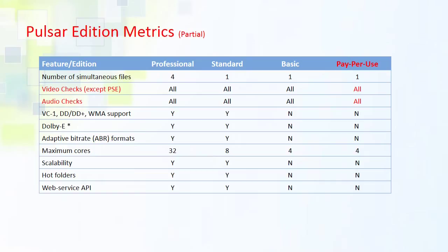This chart outlines a partial list of features of Pulsar PPU in comparison to other editions of Pulsar. All of the video and audio checks available in enterprise versions of Pulsar are also available with Pulsar PPU. There are a few video and audio formats not supported in Pulsar PPU such as VC-1, Dolby Digital, DD+, Dolby E, or WMA, but the rest of the formats supported in Pulsar are also supported in Pulsar PPU. Please refer to our brochure for the full list of formats we support as well as the full comparison chart.